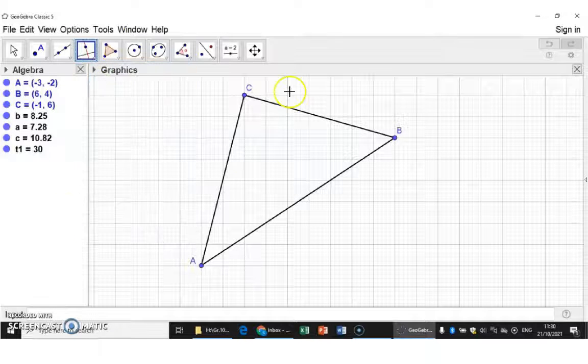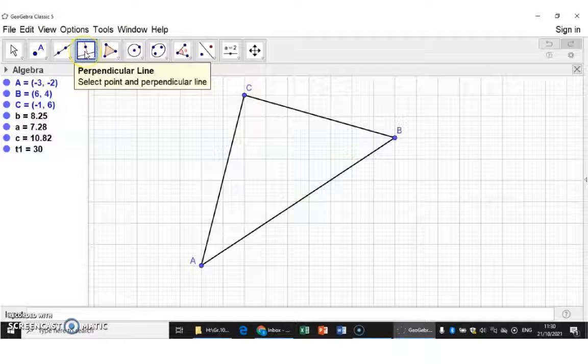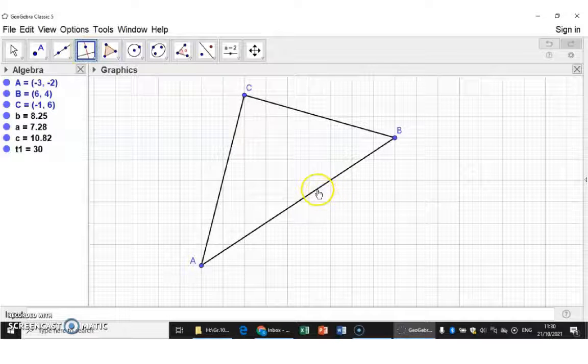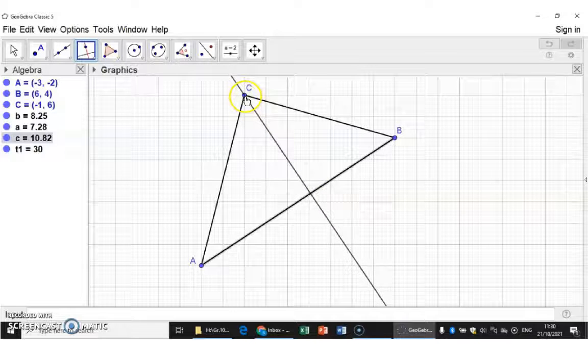So here we have triangle ABC, and I'm going to draw a perpendicular line by selecting the line and then point C.